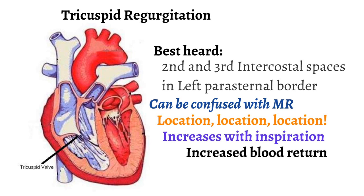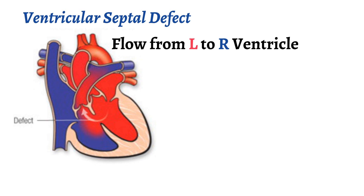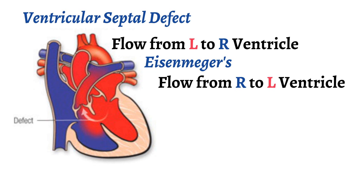Tricuspid regurgitation is most often secondary to pulmonary arterial hypertension. Lastly, let's talk about ventricular septal defects. This is when there is a hole between the ventricles, allowing blood to flow from the left ventricle, a high pressure chamber, to the right ventricle, a low pressure chamber. If significant right-sided heart failure results because of this defect, the flow will actually reverse and blood will move from the right ventricle to the left. This reversal is called Eisenmenger's syndrome.